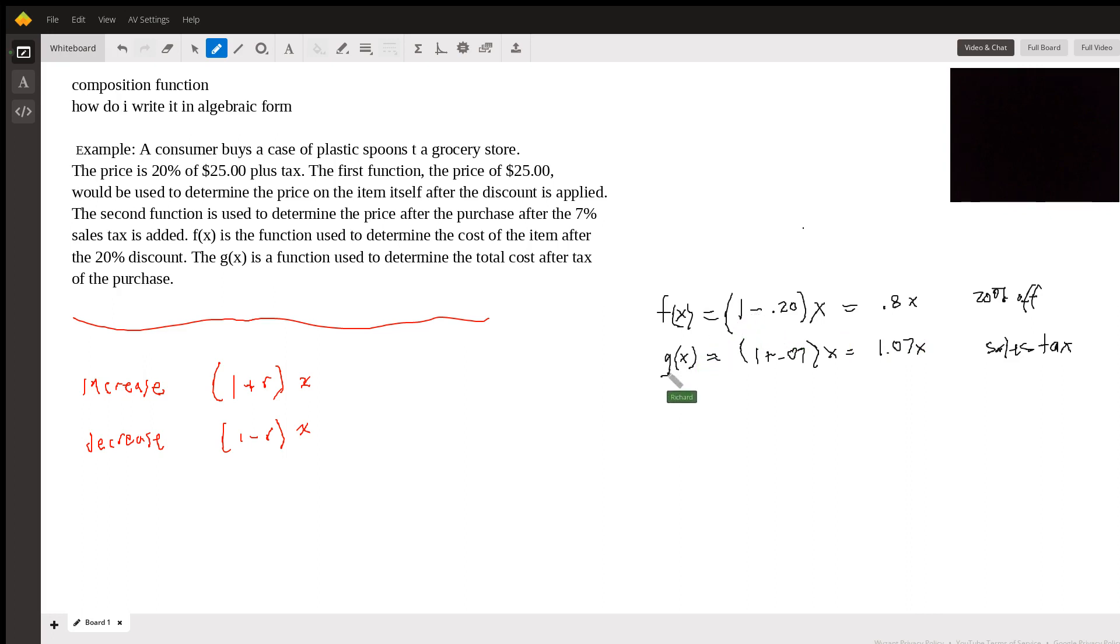Now, if we want to combine these two things, we would say the total cost would be, actually it would be G of F of X. Because the first thing we're doing is we're applying the discount. So now it's time to calculate. Because in a composite function, we're always starting with the inner function. So we want to start by discounting 20% off and then applying the sales tax.